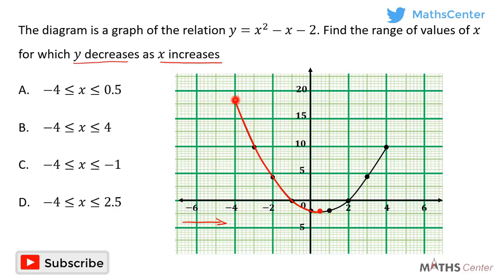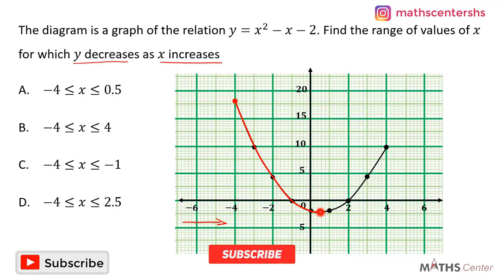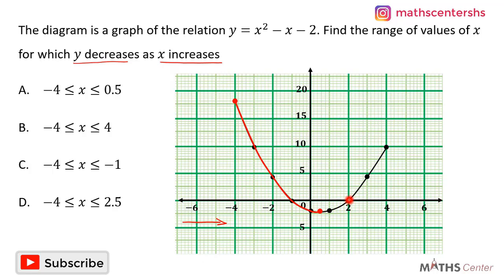At this point the value of y is 17, then 10, then 4, then 0. So you can see the values of y reduce as we move from left to right — that is, as the values of x increase — from the starting point up to the turning point. Right after the turning point, the values of y begin to increase. We are looking for the range of values of x for which y decreases as x increases.